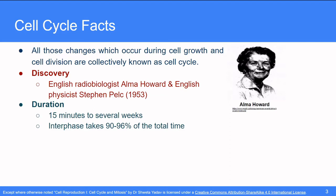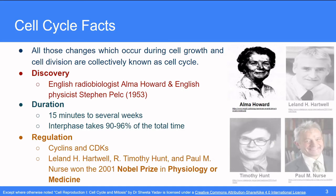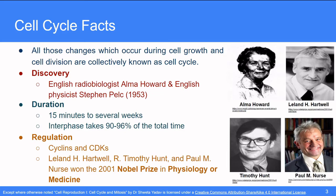The regulation of the cell cycle involves the proteins, cyclin-dependent kinases and the discovery of these proteins got Hartwell, Hunt and Nurse the Nobel Prize in Physiology for 2001.